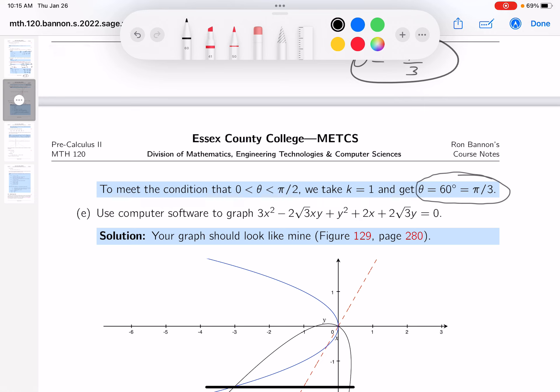But the next thing says use a computer software to graph it out. I do want to emphasize that probably the easiest thing to do for computer software is to use a product called WolframAlpha. So just go to the web, WolframAlpha, A-L-P-H-A, .com.